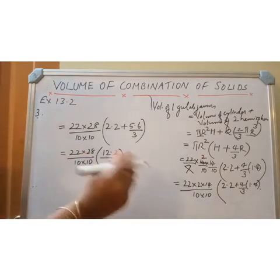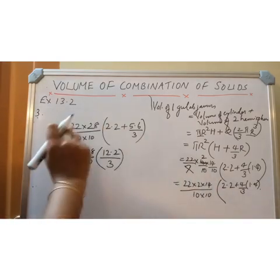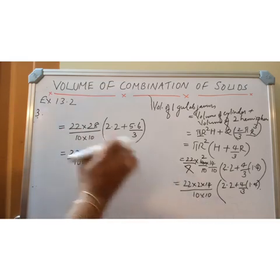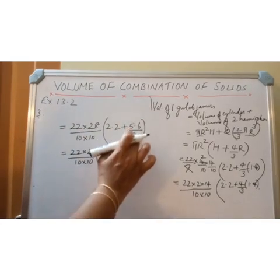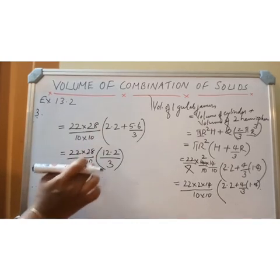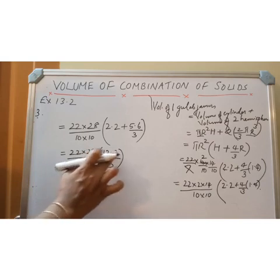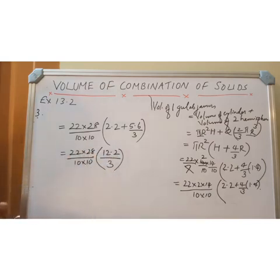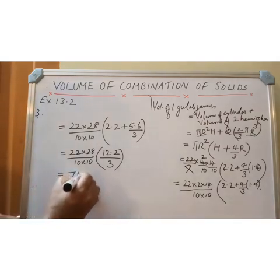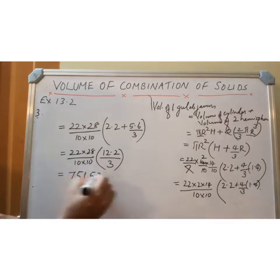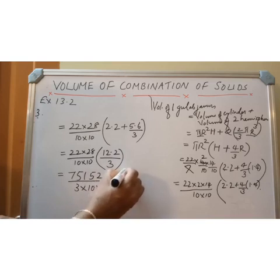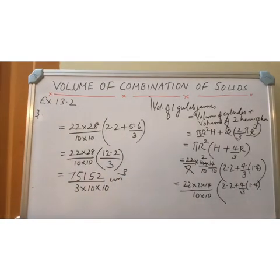After simplification, 22 × 2 × 14 divided by 10 × 10, multiplied by (2.2 + 5.6/3). Taking LCM gives 22 × 28 divided by 100, times 12.2/3. Multiplying numerators gives 75,152 divided by (3 × 100) cubic centimetres. This is the volume of 1 Gulab Jamun.